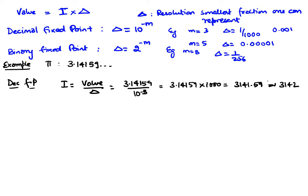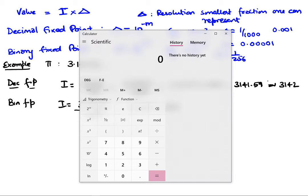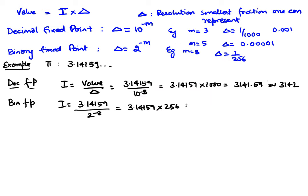So let's do the same thing with our binary fixed point. Again, our I here is 3.14159 divided by 2 to the power of minus 8, which means it's 3.14159 times 256. So let's go ahead and do the math. So that's 3.14159... I'm just going to stop at 804.24 something, so I'm going to approximate it as 804.